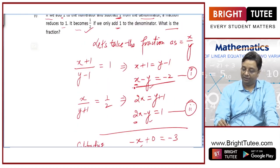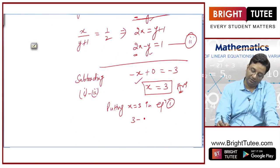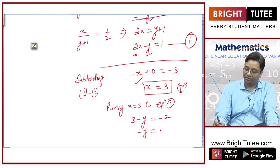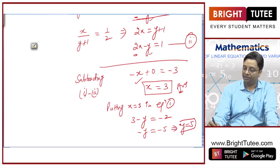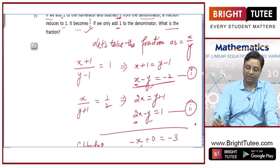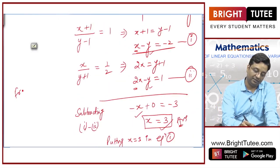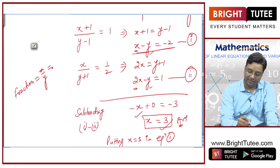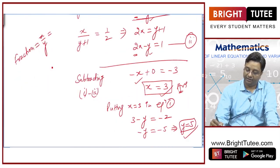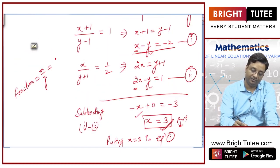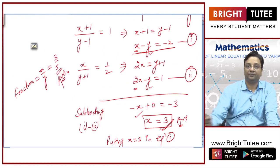Putting x equal to 3 in equation 1, which was x minus y equal to minus 2: 3 minus y is equal to minus 2, hence minus y is equal to minus 5, which makes y equal to 5. So I have x and y. The fraction is x by y, that is 3 by 5. This is my final answer.